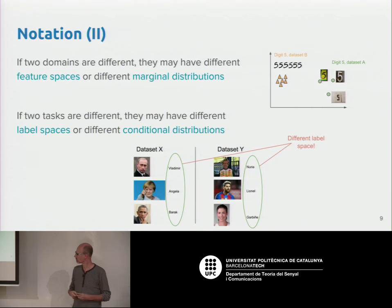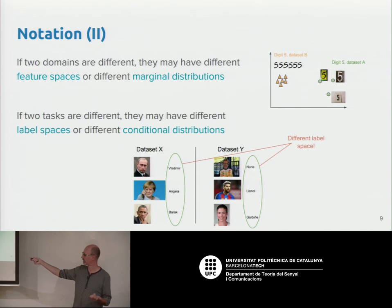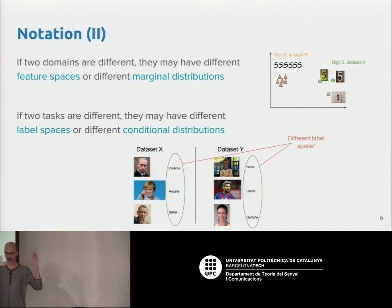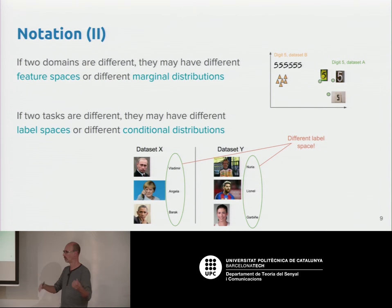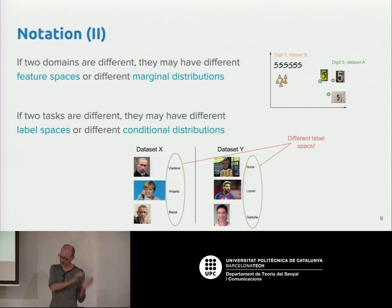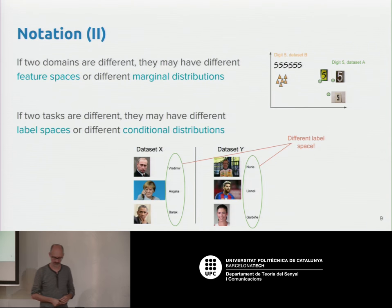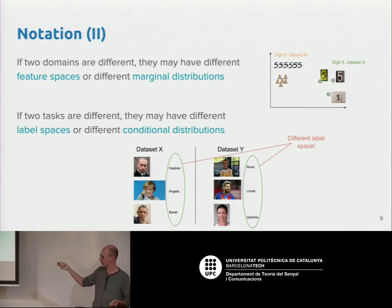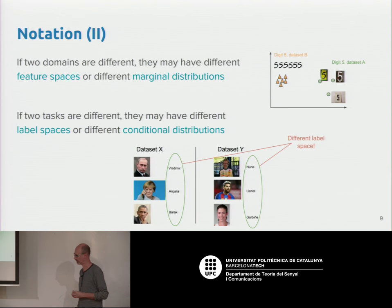This is a problem because a classifier trained to recognize one representation will probably not work on another. Domains can have different marginal distributions or different feature spaces entirely — for example, 100-dimensional versus 1,000-dimensional feature vectors. Tasks can also differ because of different label spaces. For instance, training face recognition on one class of people versus a different class gives different labels, making them different tasks. Tasks can also differ due to different conditional distributions — the probability of the label given the feature vectors — or both.